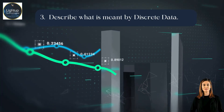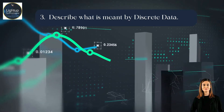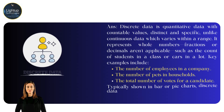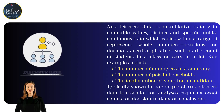Describe what is meant by discrete data. Discrete data is quantitative data with countable values, distinct and specific, unlike continuous data which varies within a range. It represents whole numbers — fractions or decimals aren't applicable — such as the count of students in a class or cars in a lot. Key examples include the number of employees in a company, pets in households, and total votes for a candidate, typically shown in bar or pie charts.